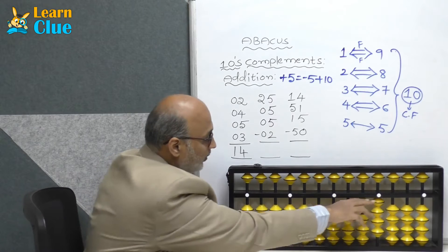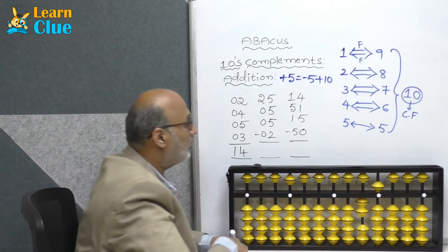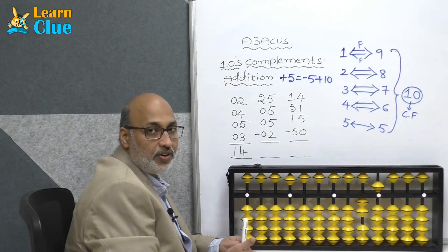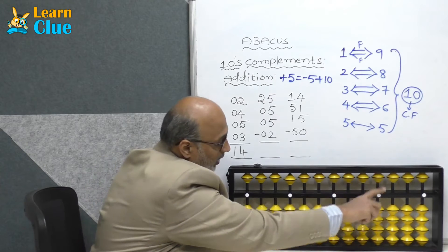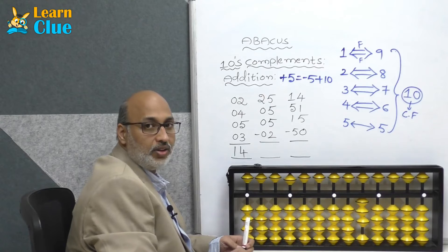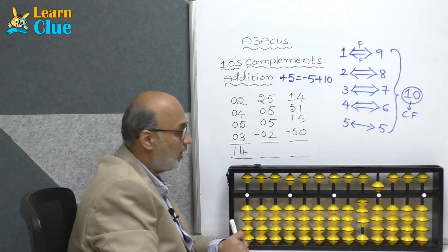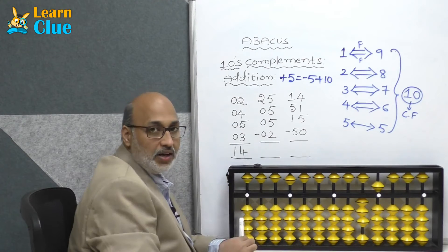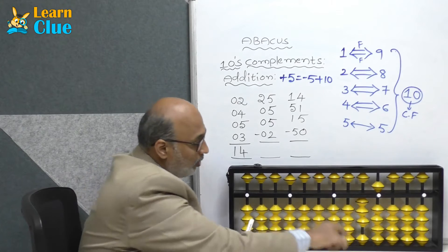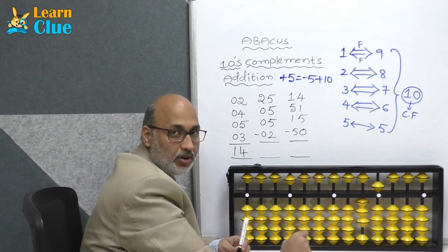Okay, clear the abacus. Next problem: 25. Now they are asking 5 — who is the friend of 5? 5 itself. So minus 5 plus 10. Now they are asking one more 5, so minus 2 we are supposed to do. As the 5 bead is used, let's try in 5s complements.